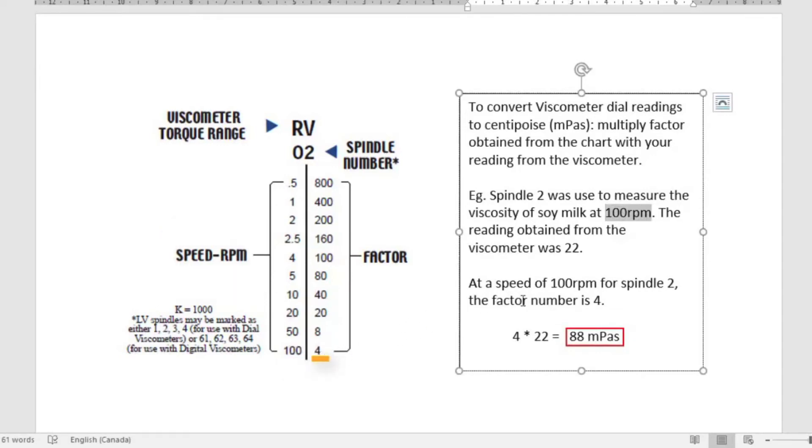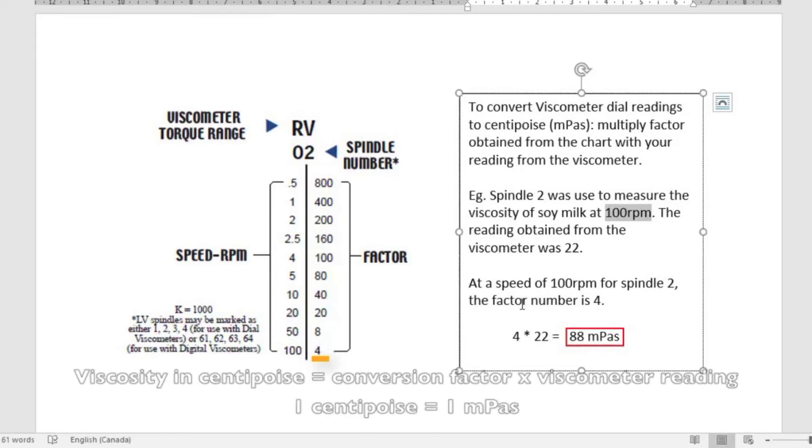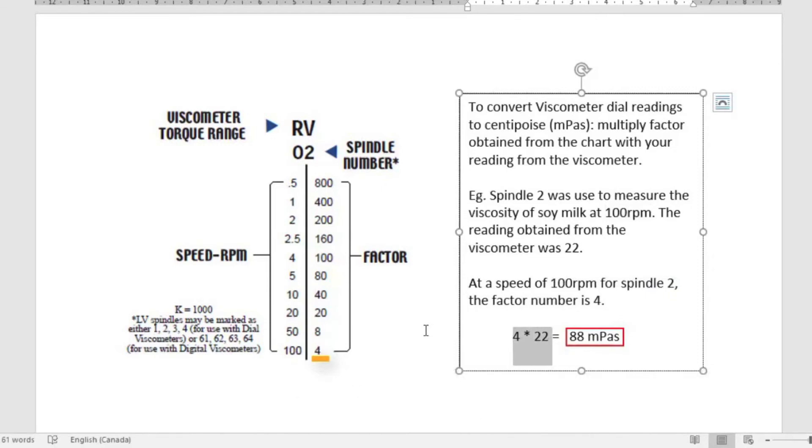To convert viscometer dial readings into centipoise, simply multiply the factor obtained from the conversion chart with the reading from your viscometer. In this example, a reading of 22 was obtained. By multiplying the conversion factor 4 with the viscometer reading of 22...